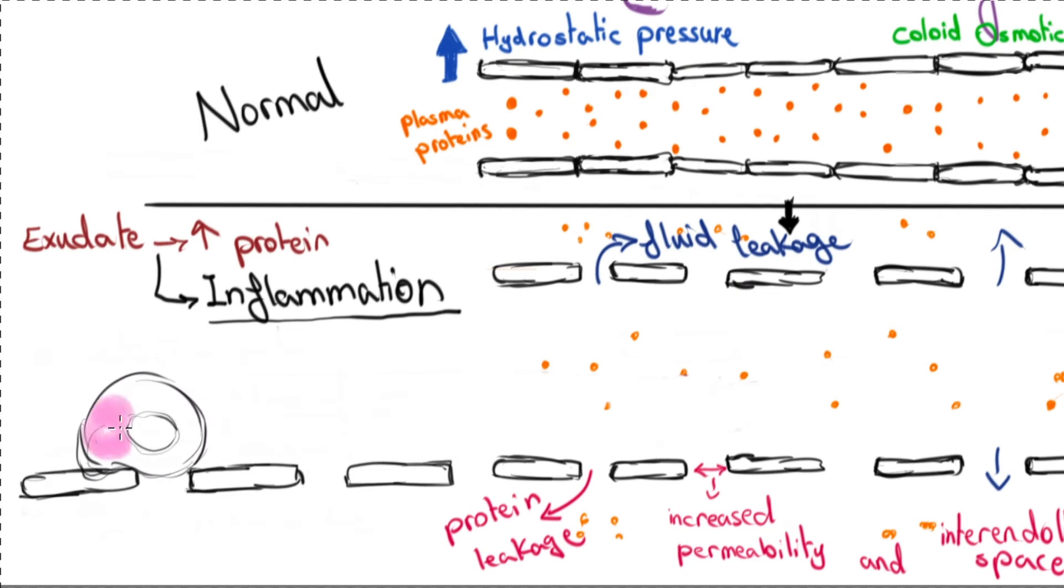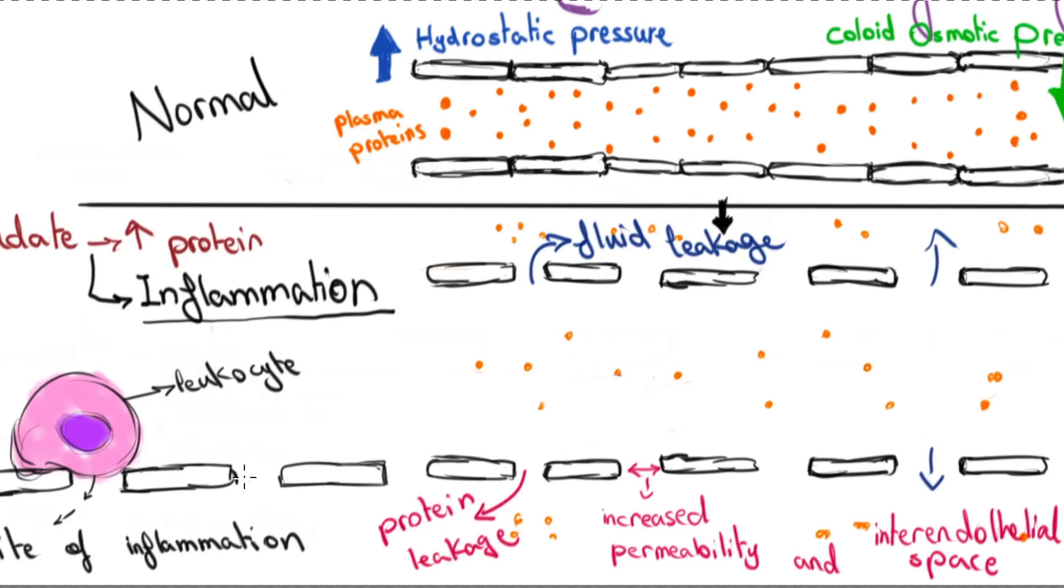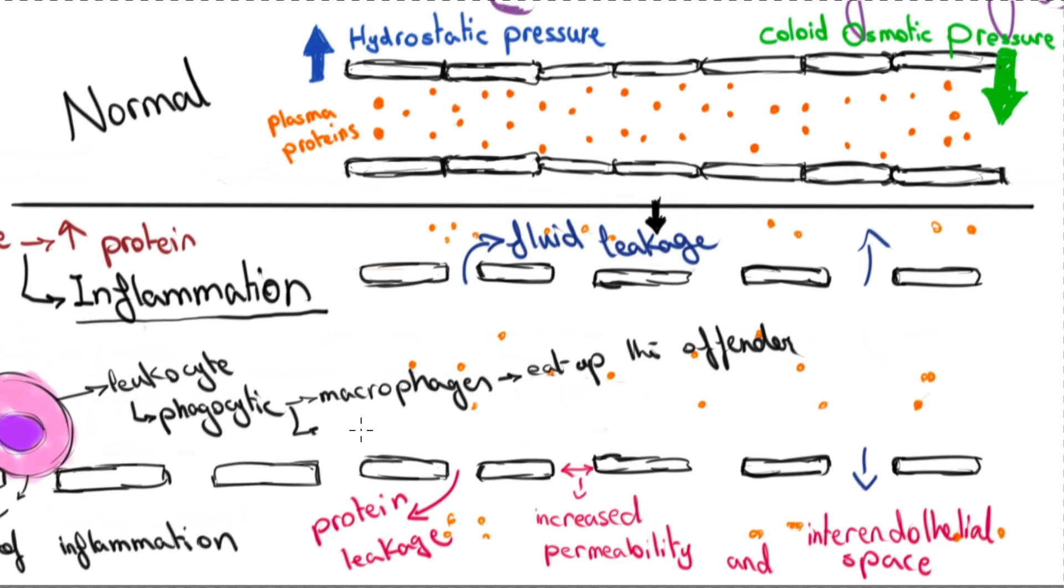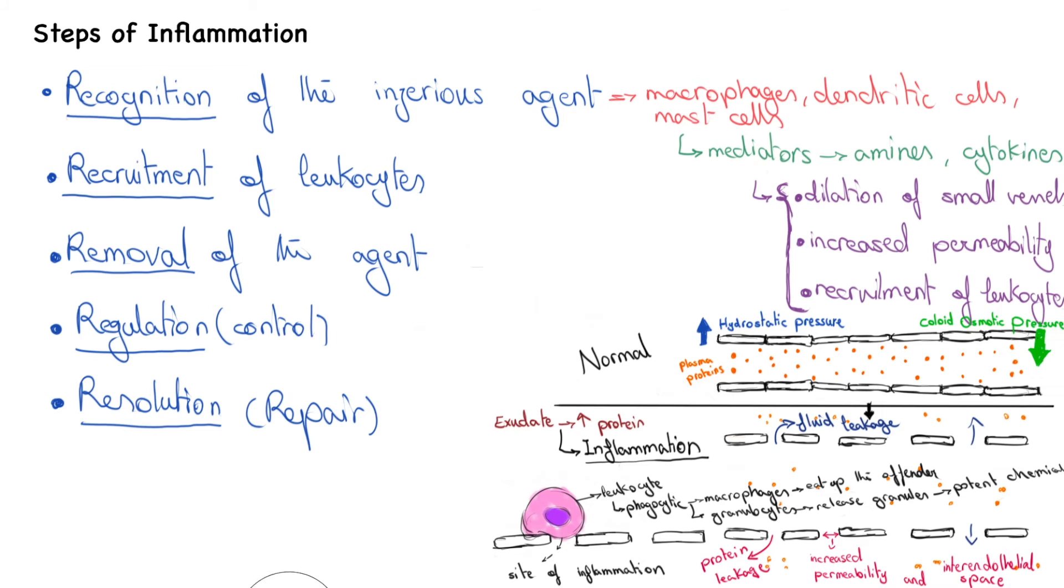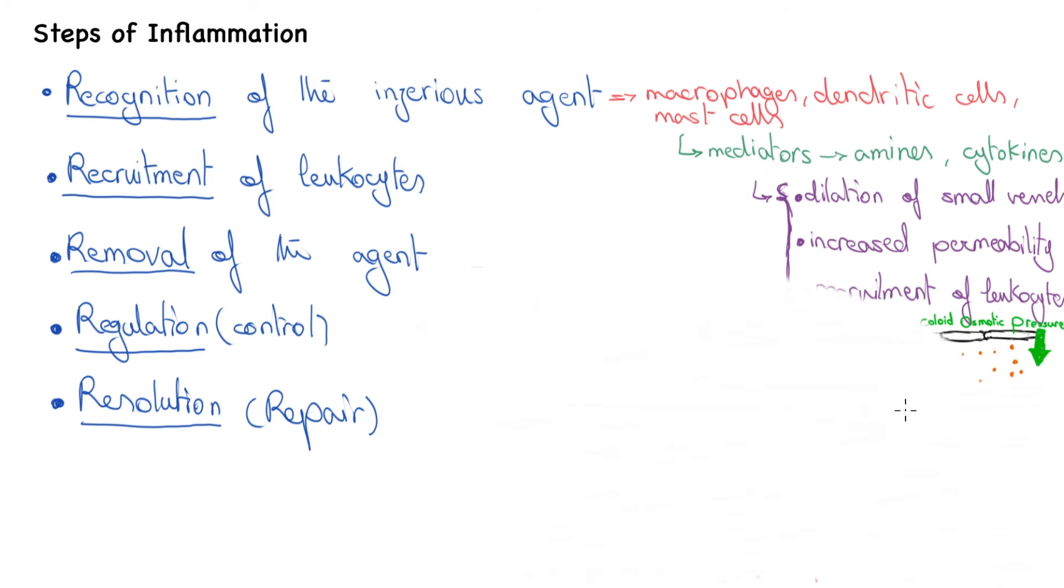Following the increased endothelial permeability, the leukocytes cross the vessel and arrive at the site of inflammation. These leukocytes are mainly phagocytic, like macrophages who eat up and digest the offender, or they can also be granulocytes to release granules full of potent chemicals.